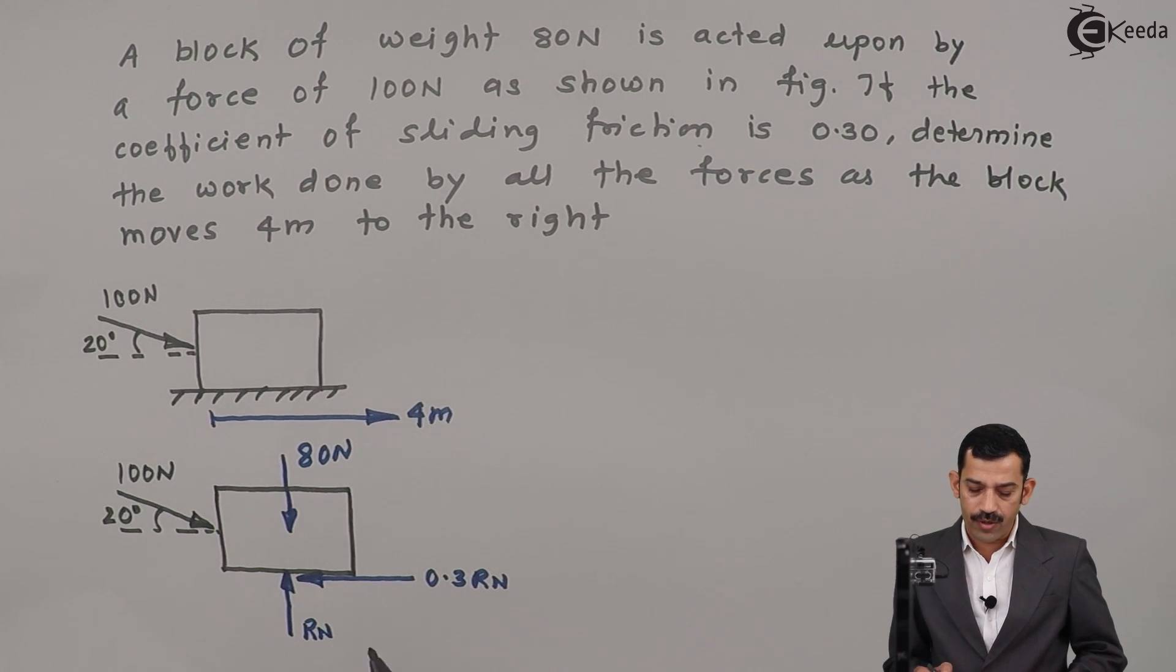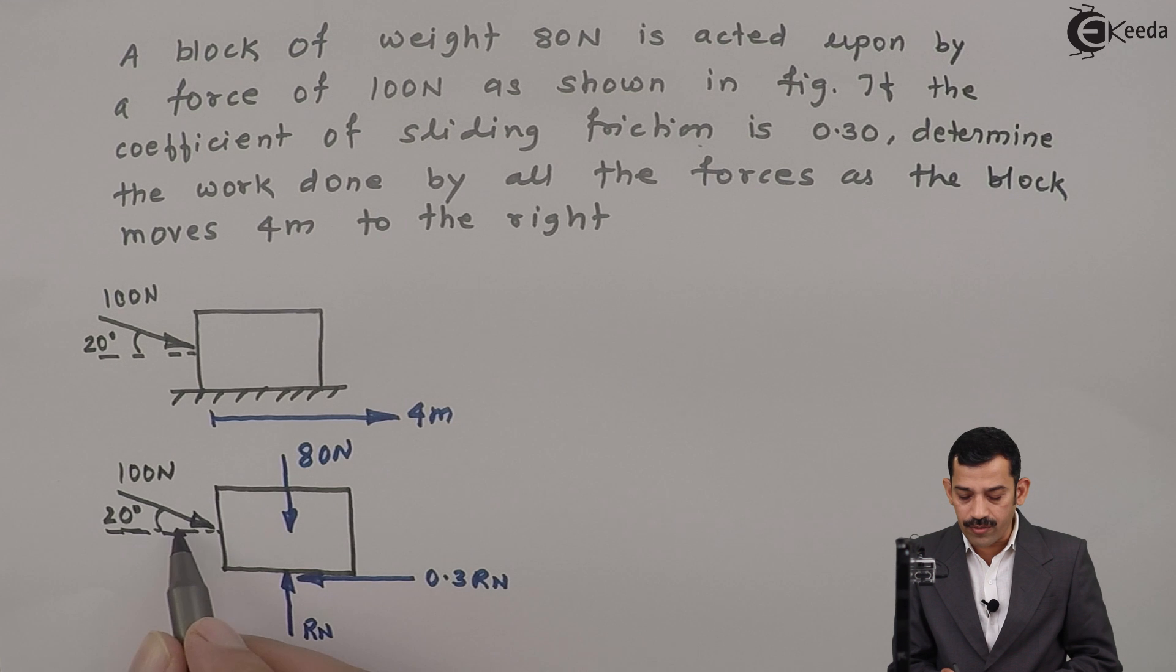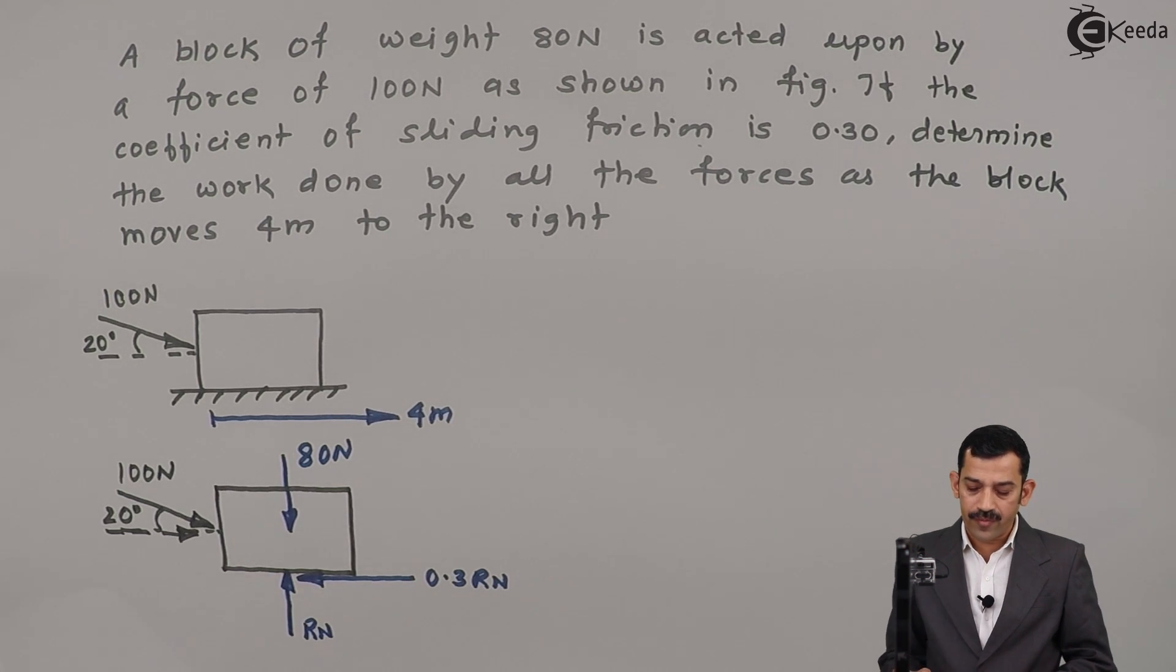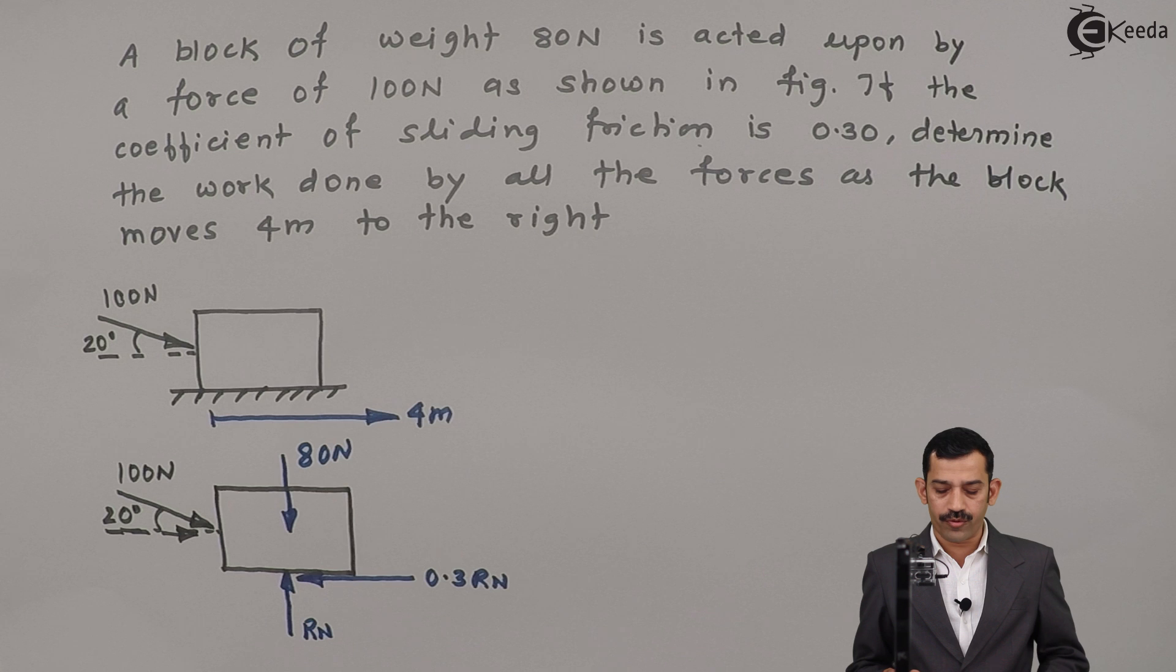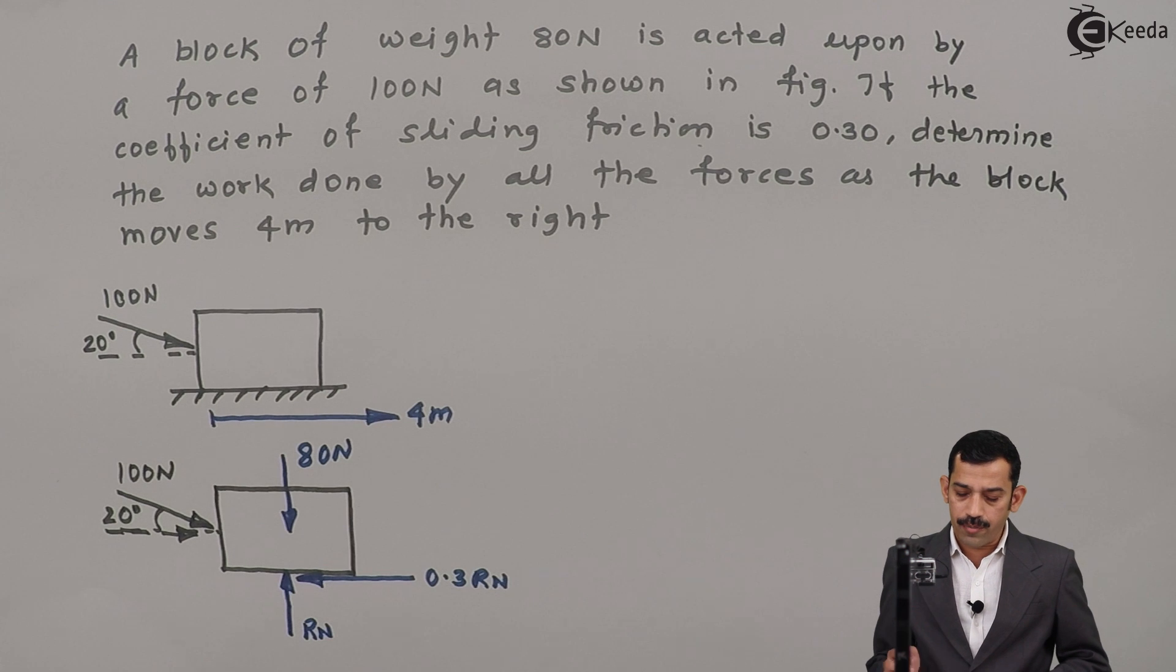We will find out work done by component of 100 and work done by frictional force. As motion is in rightward direction, component of 100 is also in rightward direction. That means work done by this component is positive. And work done by frictional force is negative because frictional force acts in opposite direction of motion.